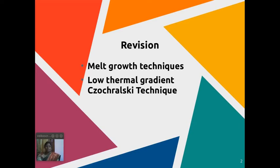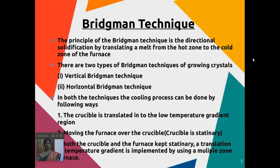Today we will discuss another melt growth technique known as the Bridgman technique. The principle of the Bridgman technique is directional solidification by translating a melt from the hot zone of the furnace to the cold zone. There are two types: the vertical Bridgman technique and the horizontal Bridgman technique.